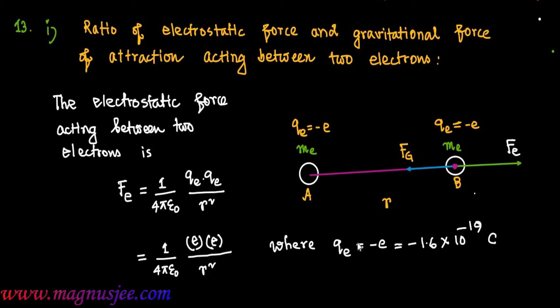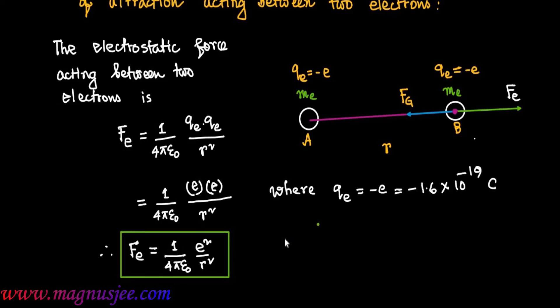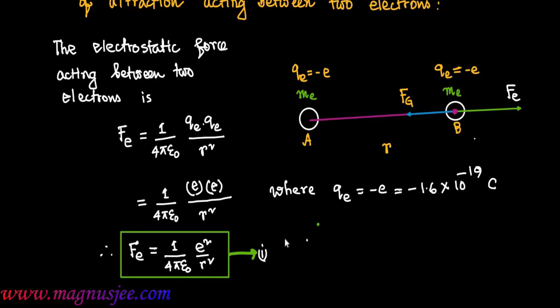Though the charge of the electron is negative, we have used only the magnitude of the charge because the sign of the charge cannot be used in the expression of force. Therefore, Fe = (1/4πε₀) · e²/R². The e² comes due to the product of e·e, not due to the product of (−e)×(−e). So finally we get Fe = (1/4πε₀) · (e²/R²), which is equation 1.